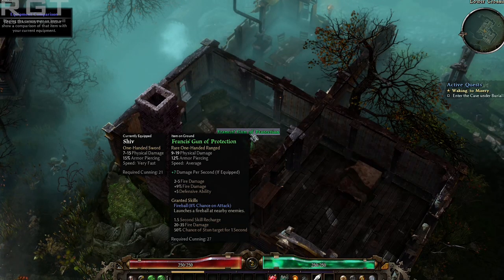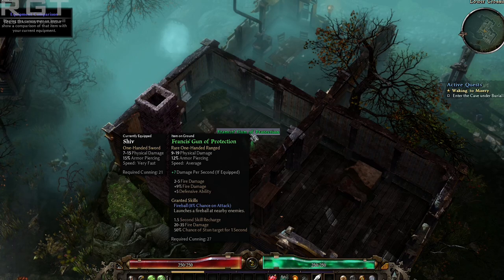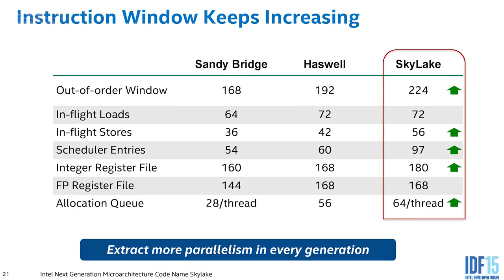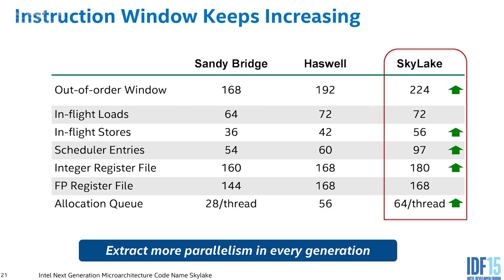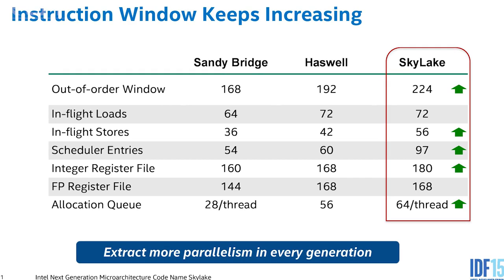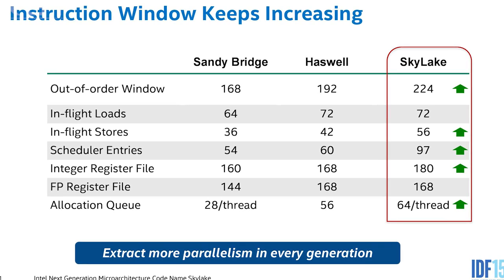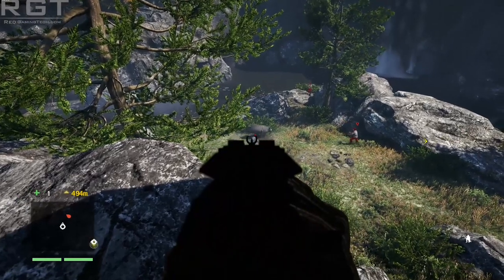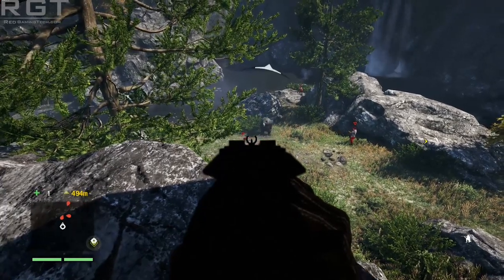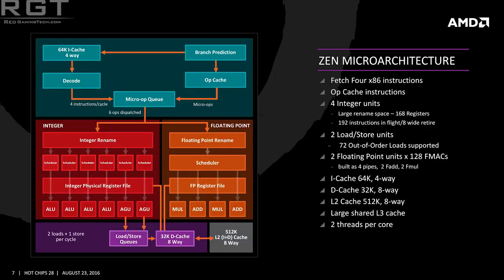Then you've got Memory Access, which is the fourth stage. In this stage, if memory is required to be accessed, it will occur. For example, it might need to store or load a piece of data, or if there's a branch in the program, it will update the program counter accordingly. We'll get to branches in just a moment as well. Writeback is where it will place the result of whatever the processor has calculated and store it at the appropriate memory location.